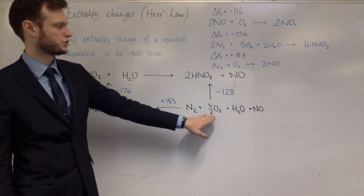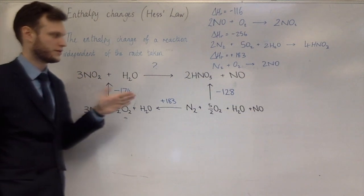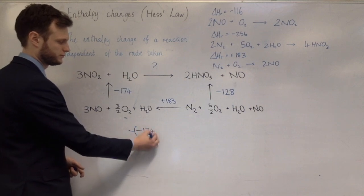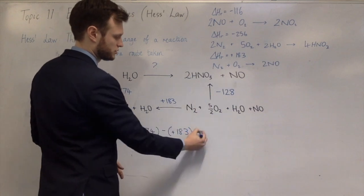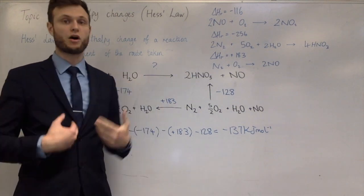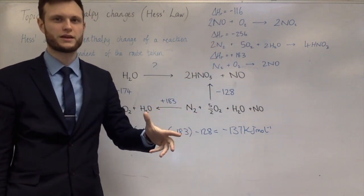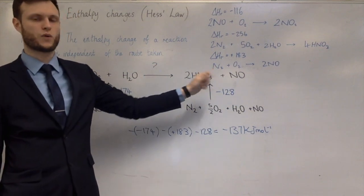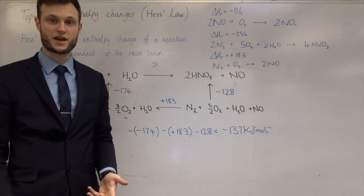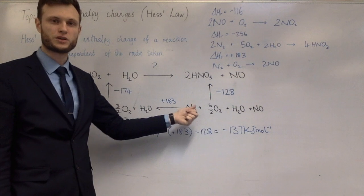Notice the direction of the arrow — it goes from nitrogen and oxygen to nitrogen monoxide. To get the unknown enthalpy change, I start at the reactants and go along the arrows: if going in the same direction I add, if going in the opposite direction I subtract. So the calculation is minus (minus 174), minus 183, minus 128, giving an answer of minus 137 kJ/mol. That's how you use unfamiliar data to calculate an unknown enthalpy change — treat it like a puzzle, find the species that appear only once, use those reactions first, and the last equation will be the link that completes the cycle.